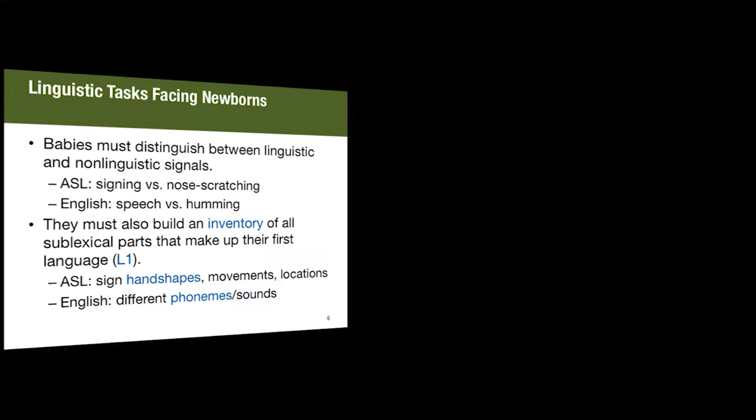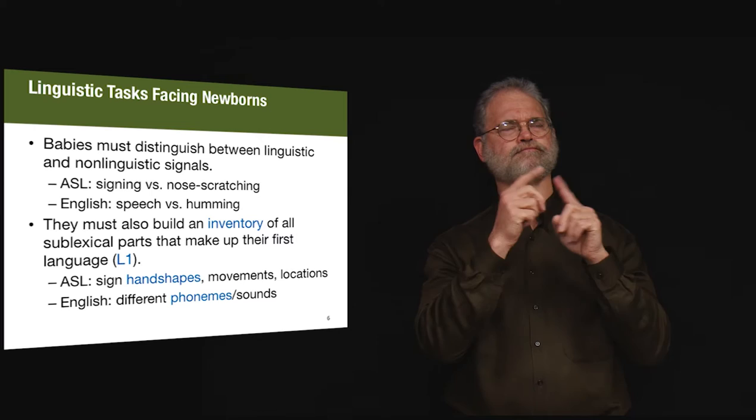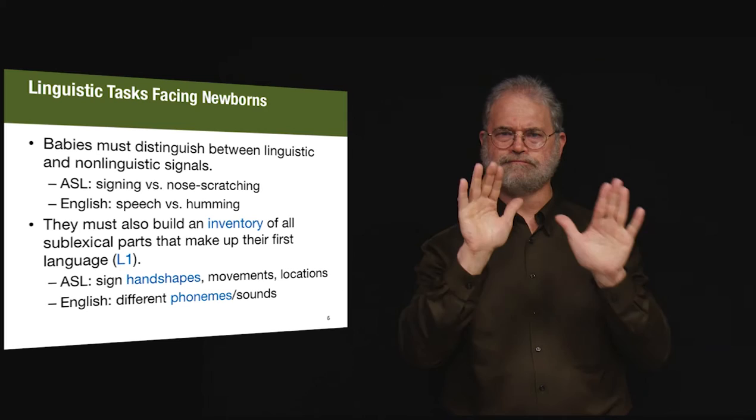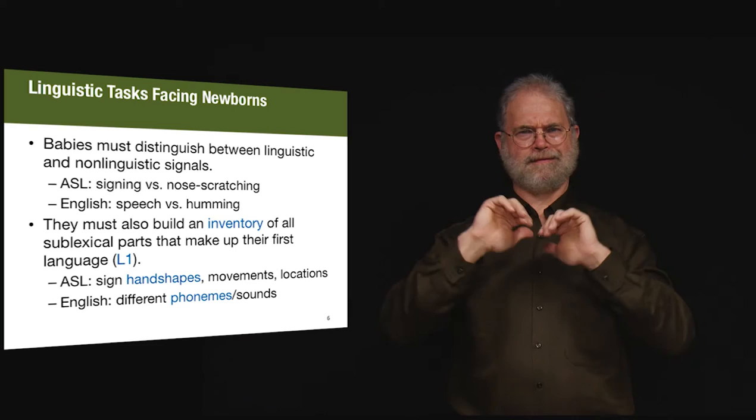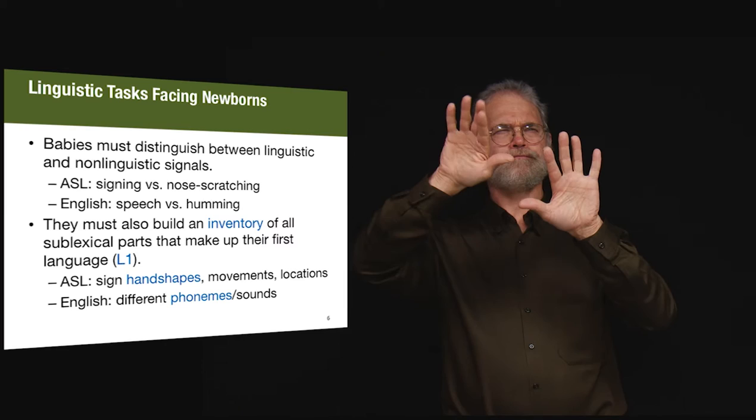The challenge for babies learning language includes the fact that input consists of a wide variety of signals, only some of which are part of language. For example, the child may observe an adult producing signs interrupted by a nose-scratching manual activity. How is the child able to determine that some manual movements are part of sign language while others are not? Hearing children acquiring a spoken language face a similar challenge. The noises they hear have to be separated into those that are linguistic and those that are not.